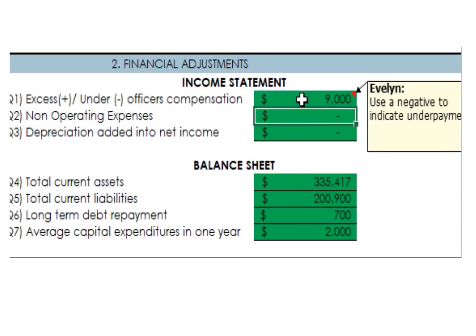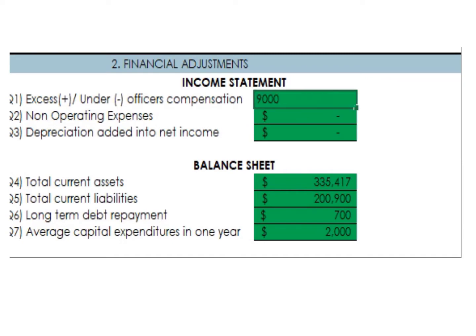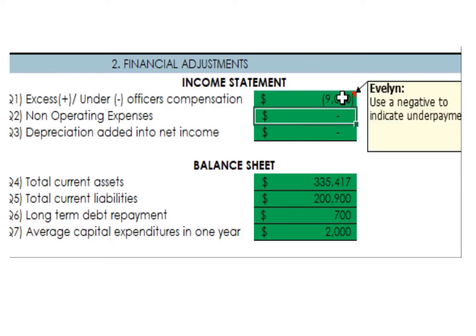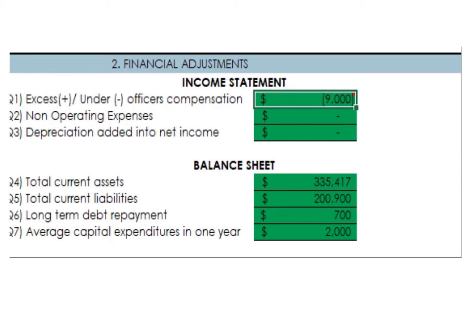Now let's make the assumption that, for example, he was paying himself $41,000 but the average was $50,000. Then that would be a negative value because he's undercompensating himself. Be sure to use a negative if it's an undercompensation and a positive if it's an overcompensation.